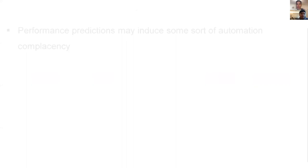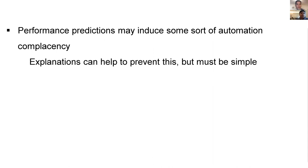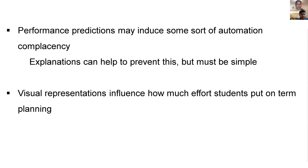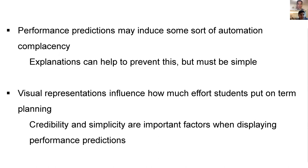To wrap up: performance predictions may actually induce some sort of automation complacency in students. Explanations can help prevent this problem, but they must be simple for students to be willing to engage with them. We also found that visual representations influence how much effort students put into term planning, and that credibility and simplicity are important factors when displaying performance predictions. Thank you all very much.